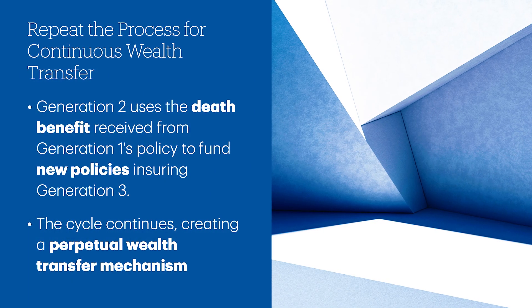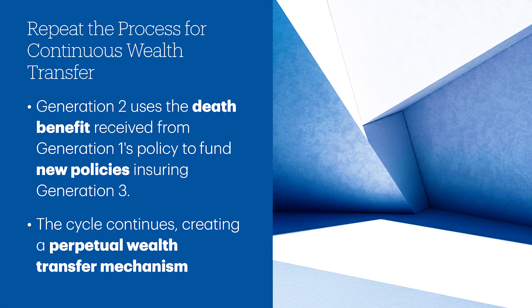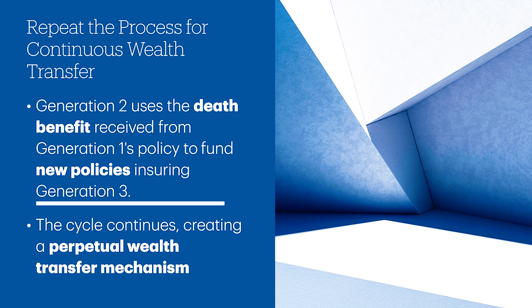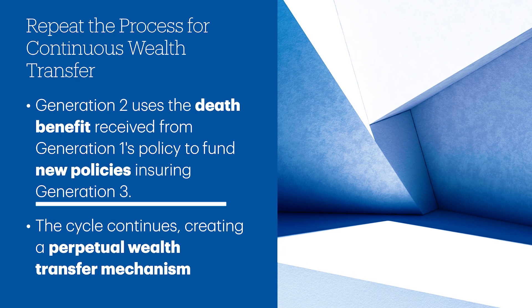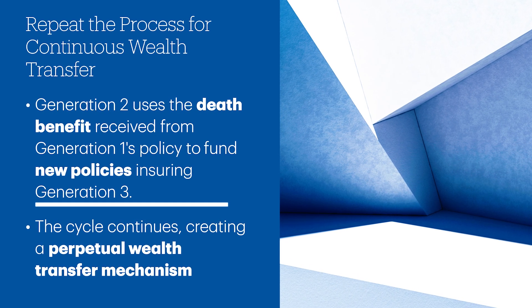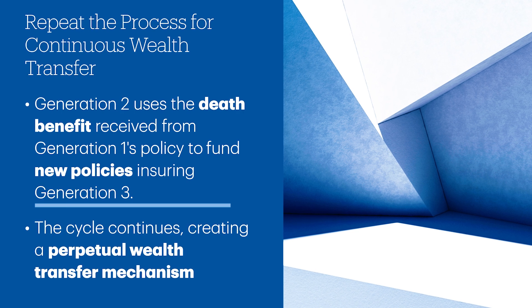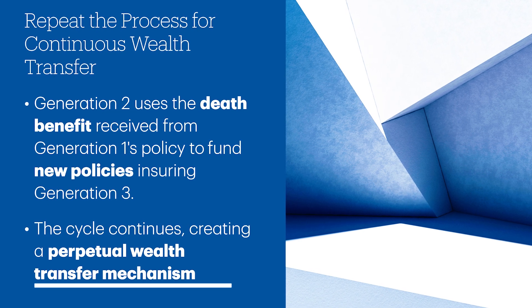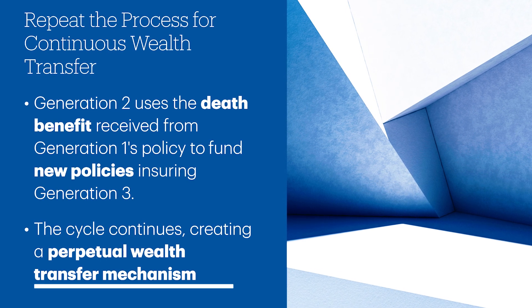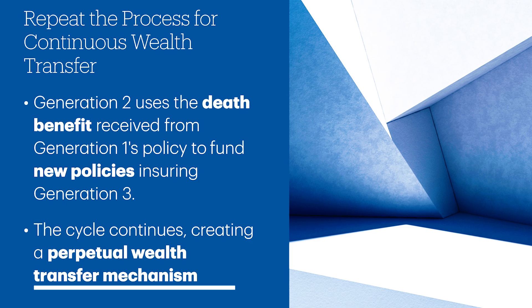You're not selling stock to go purchase something — you're able to continue to invest, continue to grow, and use the policy for your family's benefit. Repeat the process for continuous wealth transfer: generation two uses the death benefit received from generation one's policy to fund new policies for generation three. The cycle continues and a perpetual wealth transfer mechanism is created.